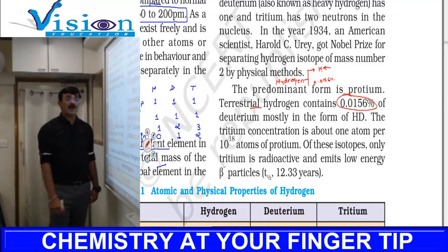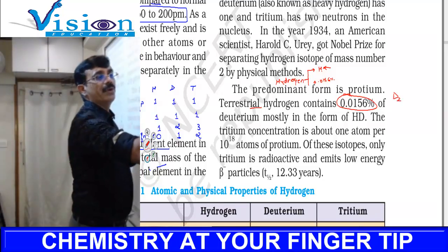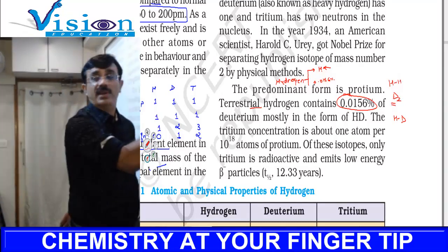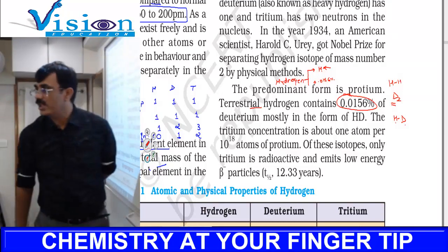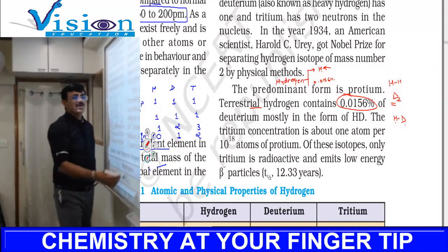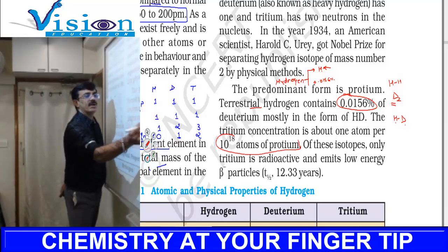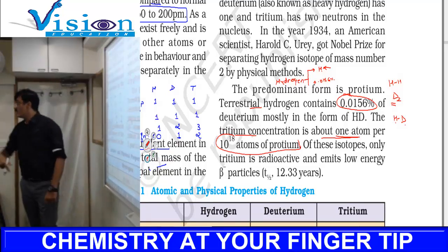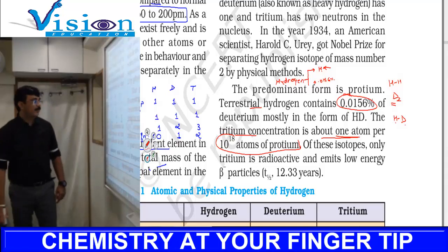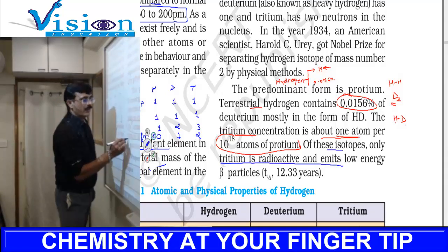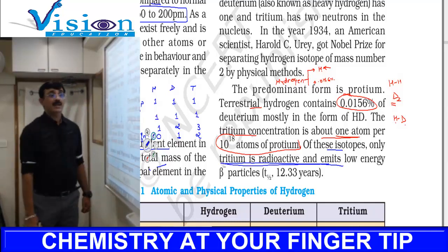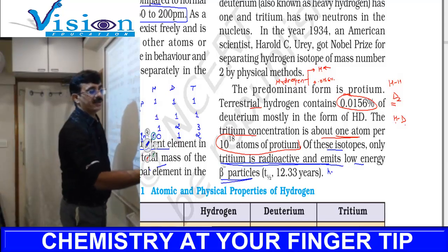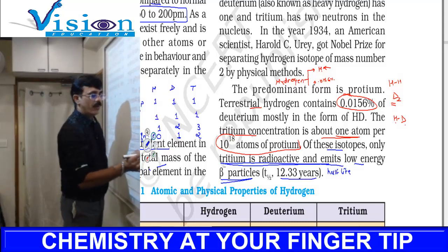Deuterium is very rare. Normally it forms as HD, not as pure D2. And tritium - when you find 10 raised to 18 atoms of protium, then you get one atom of tritium. Tritium concentration is very less. One more important thing is that tritium is the only radioactive isotope and it emits low energy beta particles, and its half-life is 12.33 years.